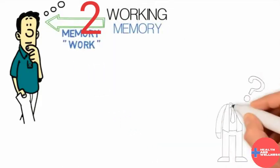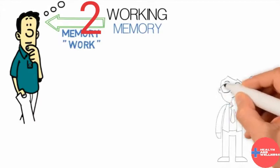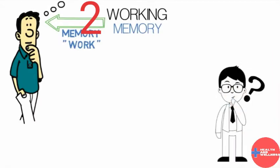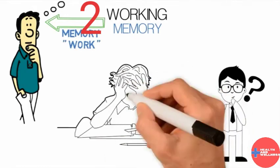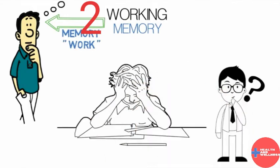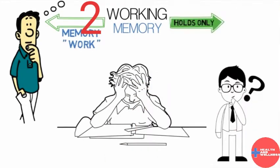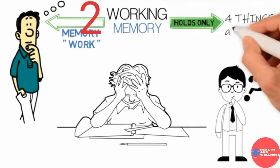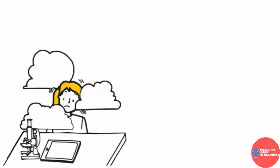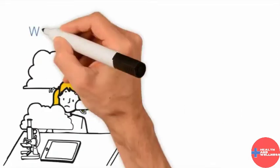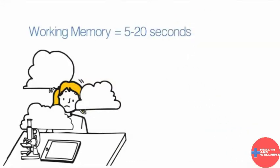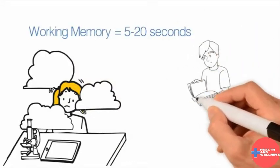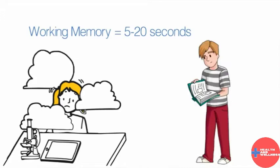People can only handle a small amount of information in their working memory at one time. We cannot think about a million things at once. In fact, we can only hold about four things in our working memory at a time. We also cannot hold that information for very long. Working memory duration is about 5 to 20 seconds unless we actively try to remember information by repeating it.